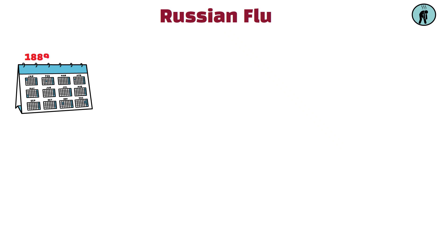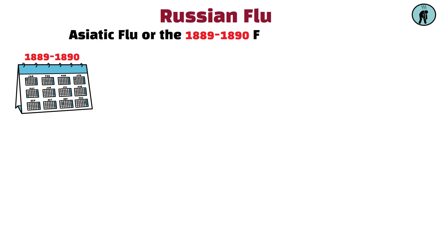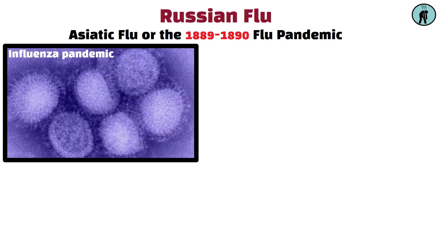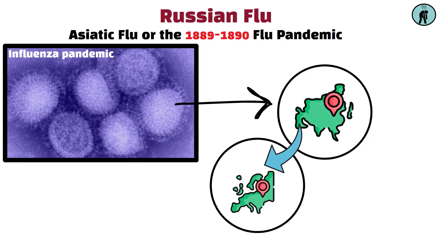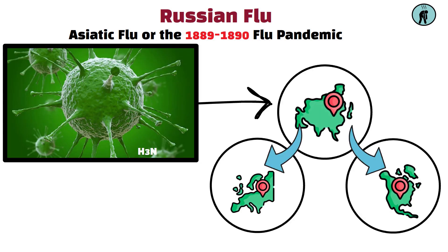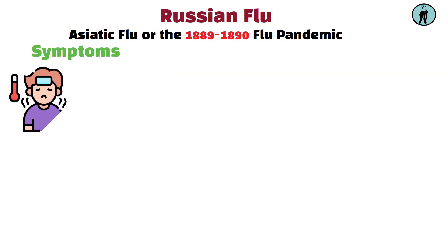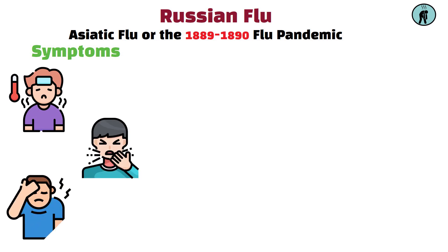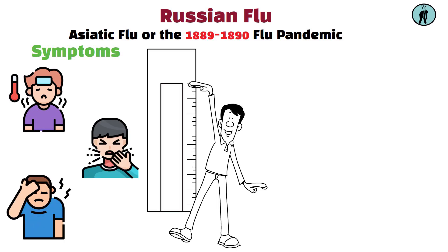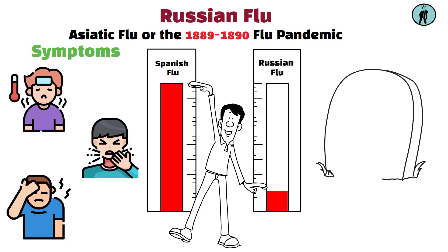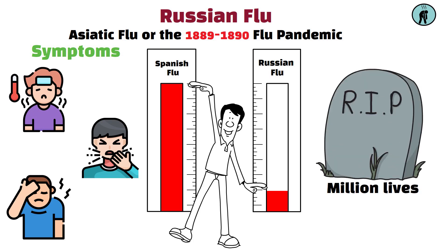Russian flu, 1889 to 1890. The Russian flu, also known as the Asiatic flu or the 1889 to 1890 flu pandemic, was an influenza pandemic that spread rapidly from Central Asia to Europe and the Americas. Caused by the H3N8 virus, it infected an estimated 40% of the world's population. Symptoms included high fever, cough, and fatigue. While the mortality rate was lower than that of the Spanish flu, the Russian flu still claimed over a million lives.